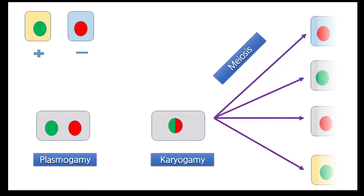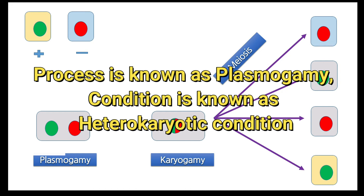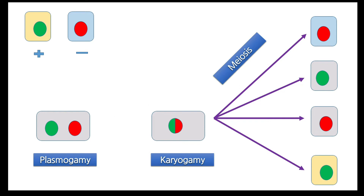In this picture, there are two cells — plus and minus. These two cells come together, the cell wall between them disappears, and their cytoplasm mixes. But the two nuclei are still separate — this condition is called plasmogamy. After that, the nuclei mix and form a 2N (diploid) condition — this is karyogamy. After karyogamy, meiosis occurs and cells with haploid nuclei are formed.